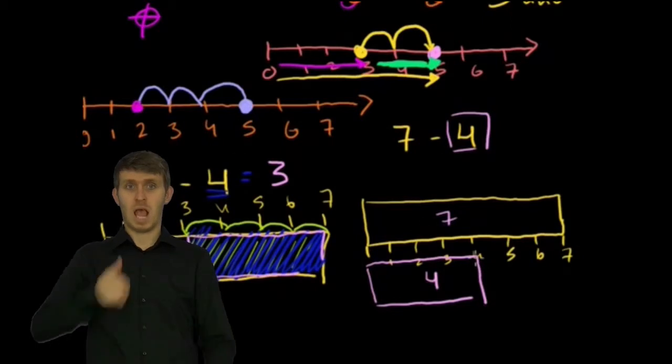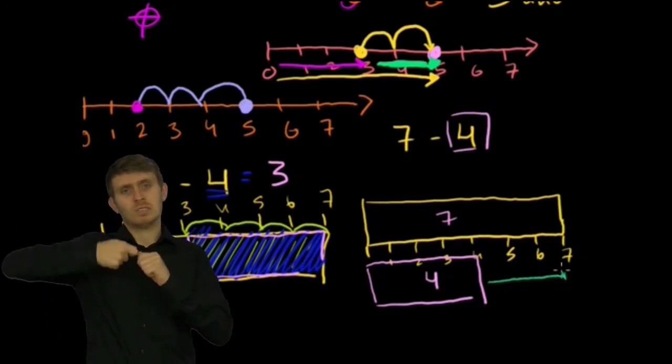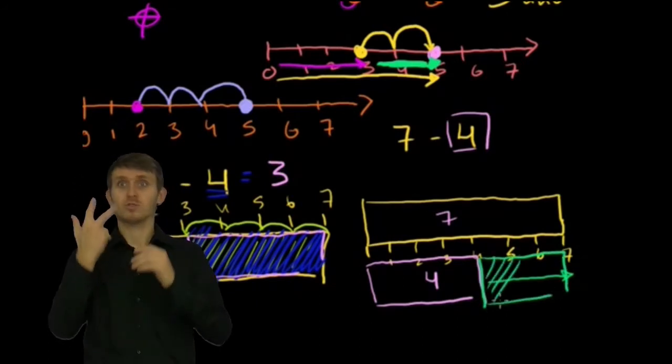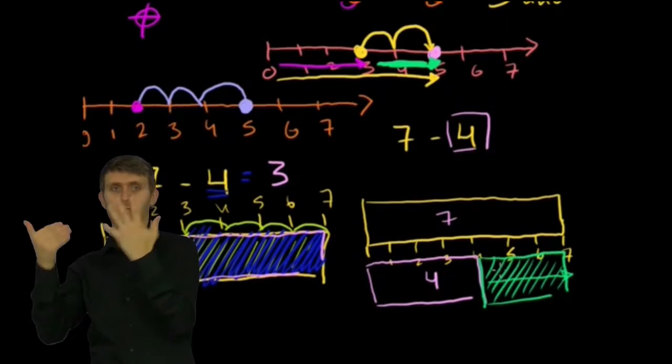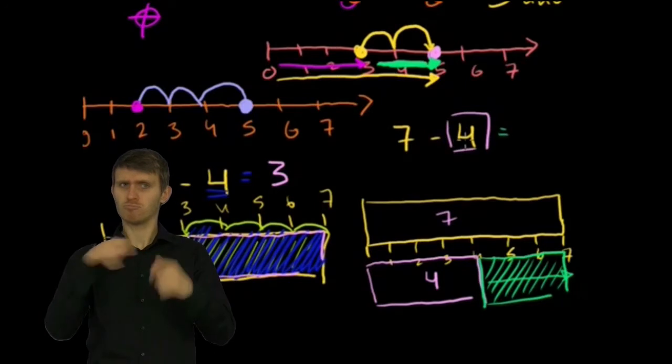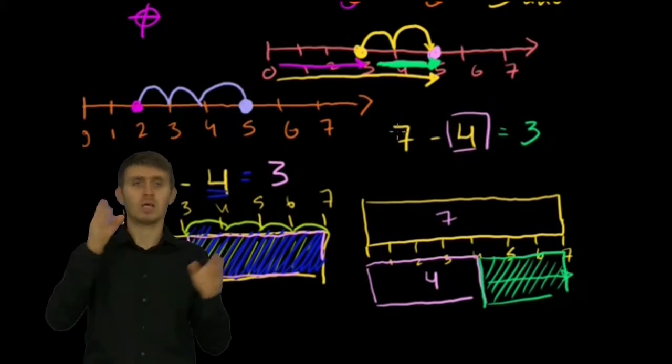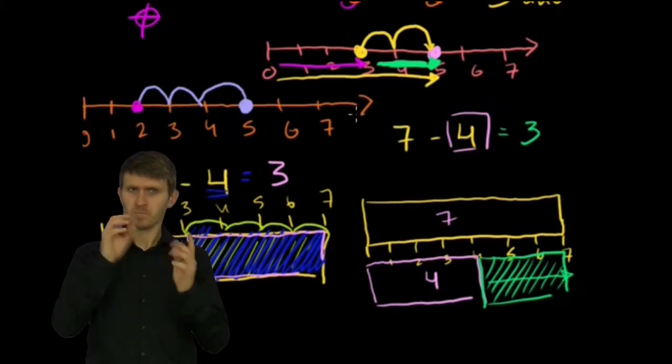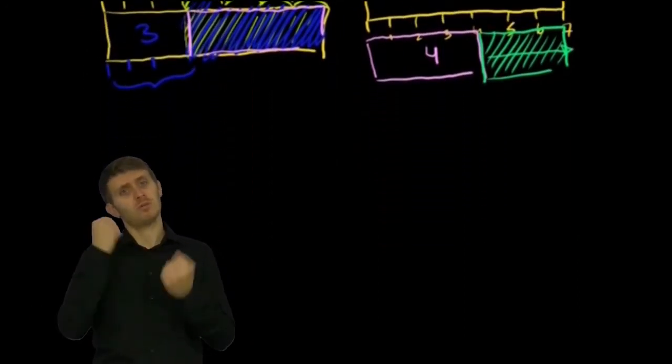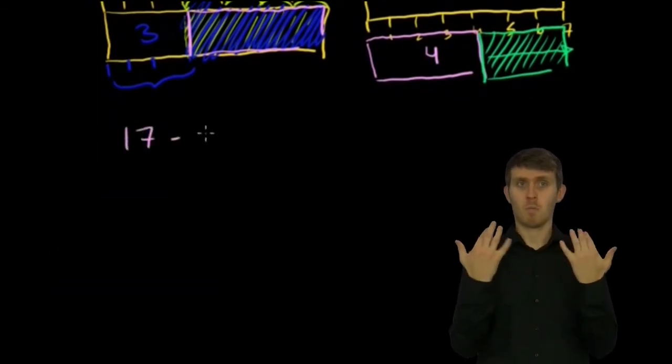You could view 7 minus 4 as taking 4 inches away from the long piece of wood, or you could view 7 minus 4 as the difference between the 4-inch piece of wood and the 7-inch piece of wood. So in this case, what's the difference? To go from the 4-inch piece of wood to the 7-inch piece of wood, I would have to grow by 3 inches. That's all a little bit of review from the last video. Now, what I also want to do in this video is start tackling slightly larger problems.